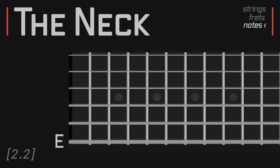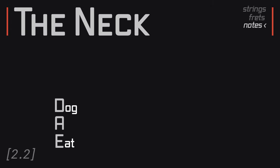Moving along up the strings in order, the next string is an A, then a D, then a G, then a B, and then the first string is another E. So the open strings are E, A, D, G, B, and E. There are probably a million mnemonics out there to remember this. I'll probably look some up and include them, but I have to share the one I've used since I was a kid — I'm pretty sure I came up with this myself because it makes no sense, but after nearly 20 years I haven't forgotten: E, A, D, G, B, E — or 'Eat a Dog, Goodbye Everyone.'